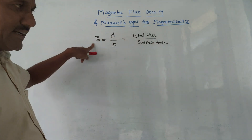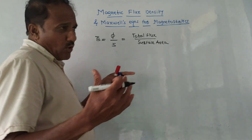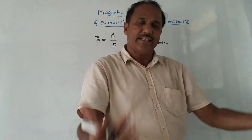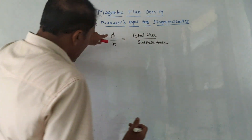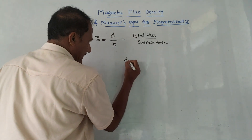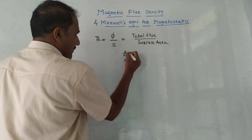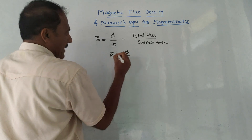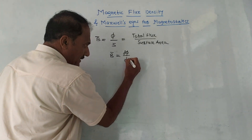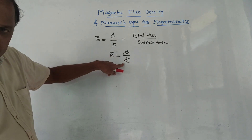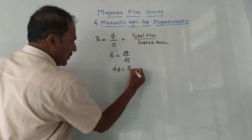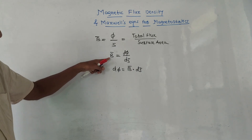The definition of magnetic flux density is the ratio of total flux upon total surface area. In this subject, you need to write the equation in both differential and integral form. If we consider a small surface area, it is denoted by dS, and the corresponding flux is dΦ. So B-bar becomes dΦ upon dS-bar, where dS-bar is the differential area vector.